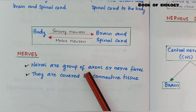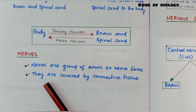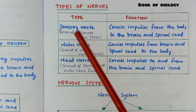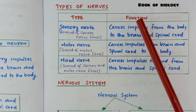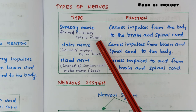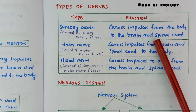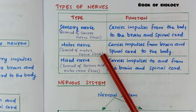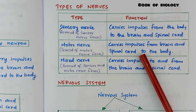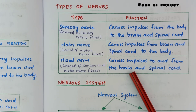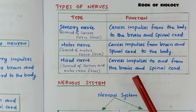Next topic: nerves. Nerves are groups of axons or nerve fibers, covered by a tissue called connective tissue. Types of nerves — there are three types: sensory nerve, motor nerve, and mixed nerve. Sensory nerve: formed of sensory nerve fibers; carries impulses from the body to the brain and spinal cord. Motor nerve: formed of motor nerve fibers; carries impulses from the brain and spinal cord to the body. Mixed nerve: formed of both sensory and motor nerve fibers; carries impulses to and from the brain and spinal cord.